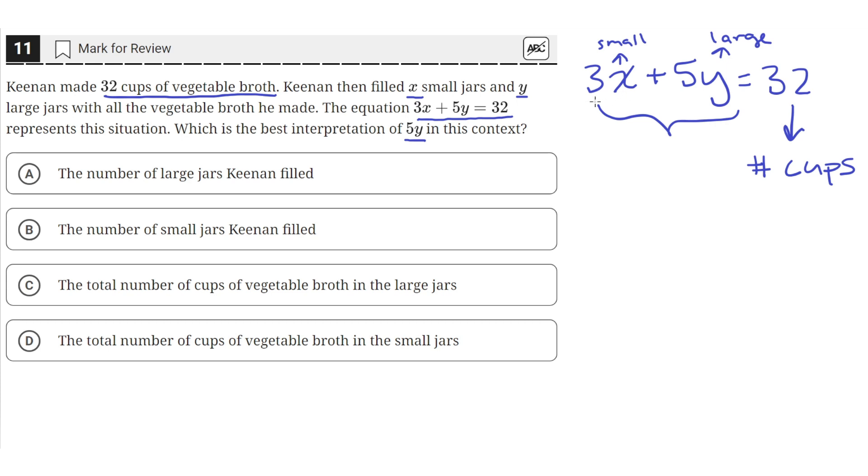Multiplying 3 with the number of small jars gives us the total number of cups in small jars. And then multiplying 5 with y gives us the total number of cups of vegetable broth in large jars.